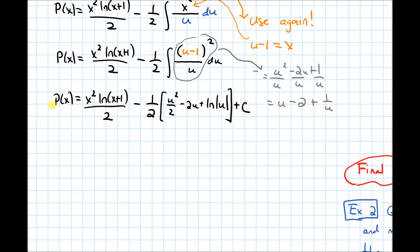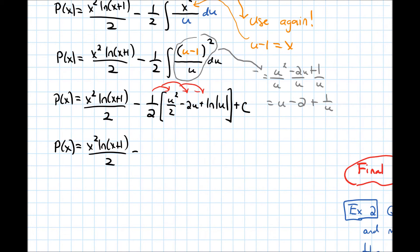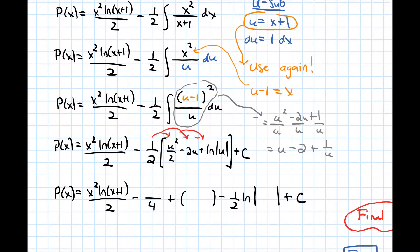We did a u-substitution, so we need to back-substitute u = x+1 to get everything in terms of x. Distributing the −1/2 factor gives: x²·ln(x+1)/2 minus (x+1)²/4 plus (x+1) minus (1/2)·ln|x+1| plus C.